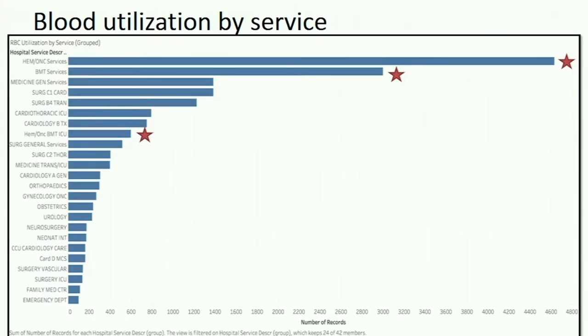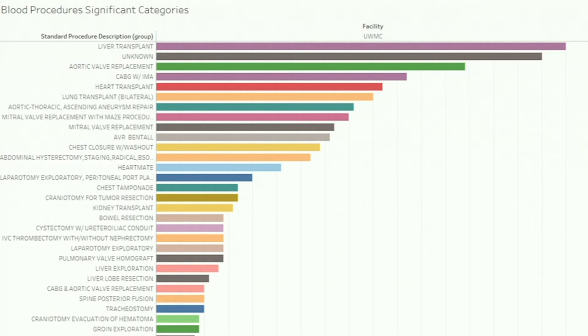Once the data is robust, that's when you can start analyzing it. What does this look like when we start blending data from the EMR and the LIS? Here we can look at service data from ORCA of where the transfusion went and how many units from SunQuest. We can see that hematology/oncology is one of our biggest users, as would be expected, followed by surgical services combined as a close second.